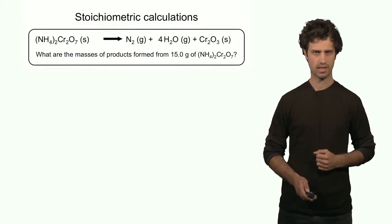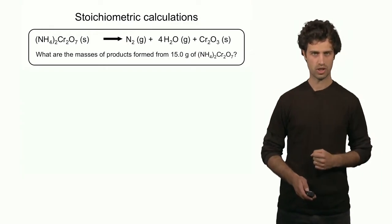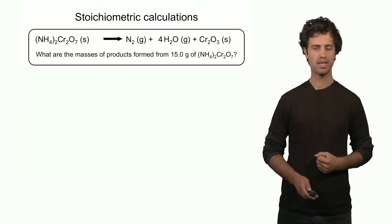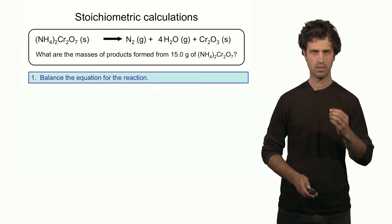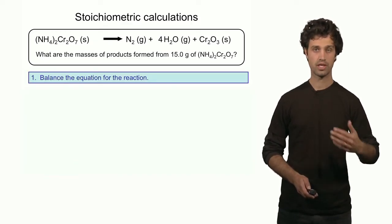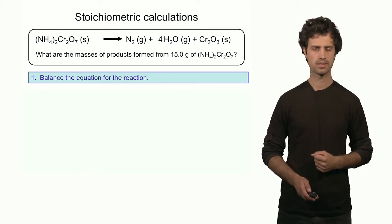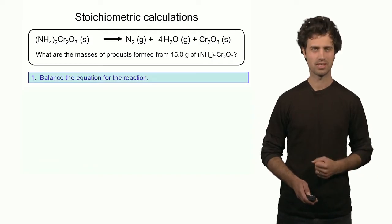Let's look at an example using the same chemical equation. We want to determine how many grams of products we form given 15 grams of the reactant. The first step is to make sure the equation is balanced. Fortunately, we already did that in a previous segment, so we can move on.